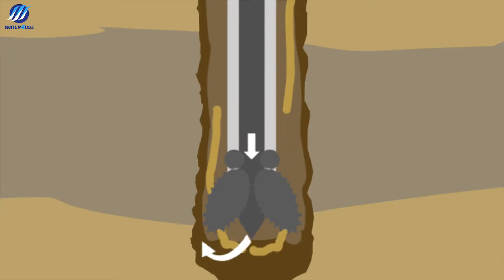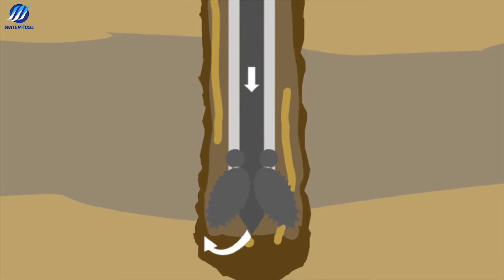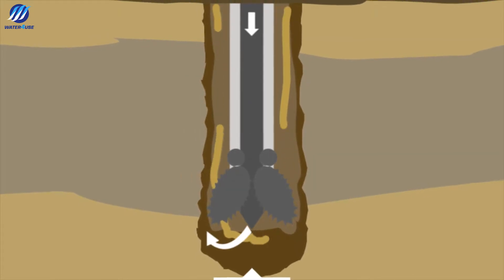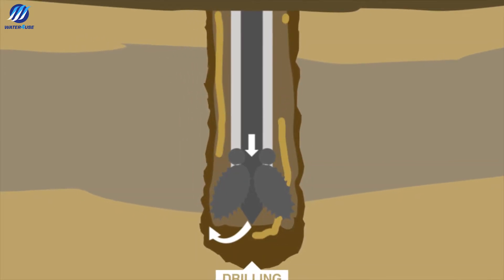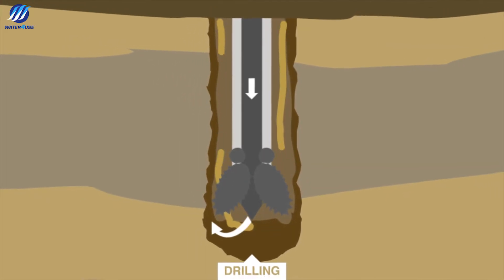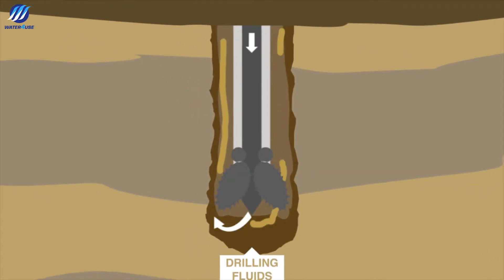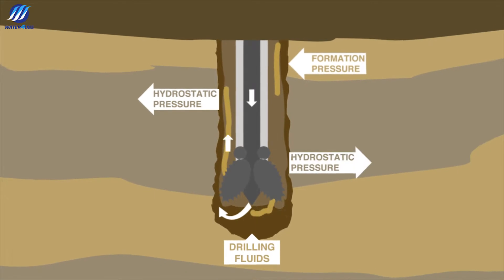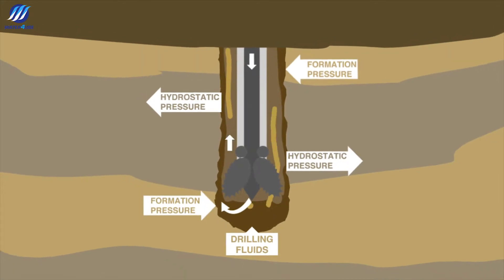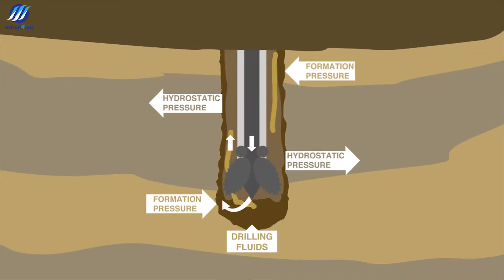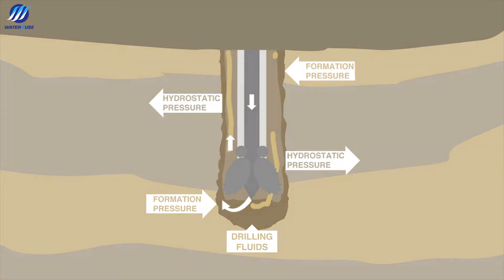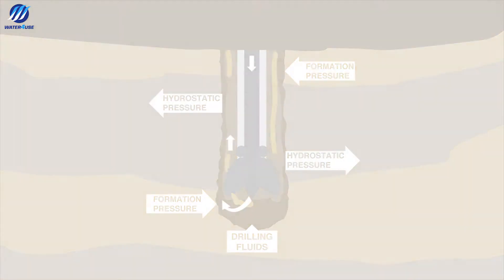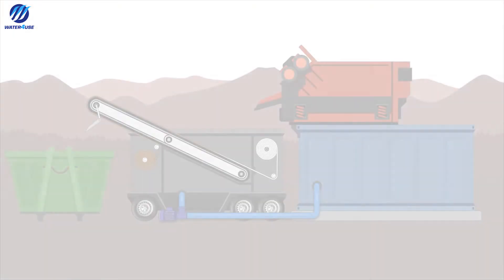The drilling fluid functions include providing hydrostatic pressure to prevent fluids from entering into the wellbore, keeping the drill bit cool and clean during drilling, and suspending the drill cuttings when the drilling assembly is brought in and out of the hole.